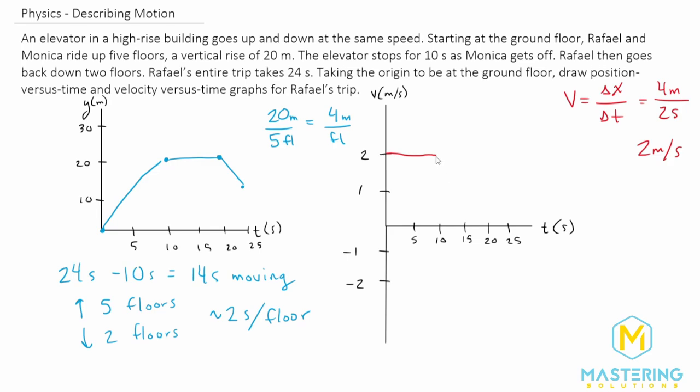And then it stops for 10 seconds. So now we have a zero velocity for 10 seconds from 10 to 20.